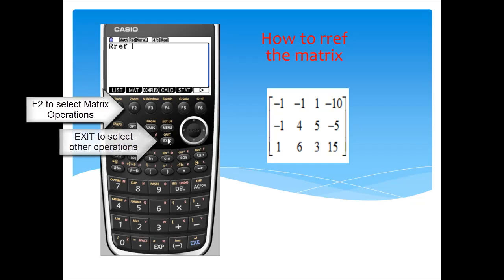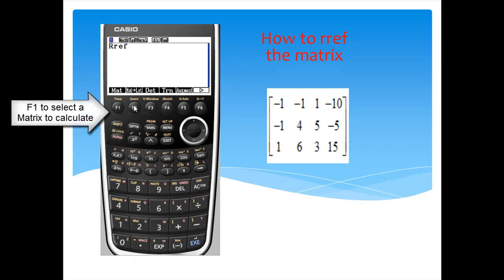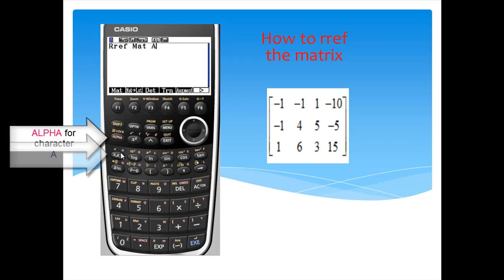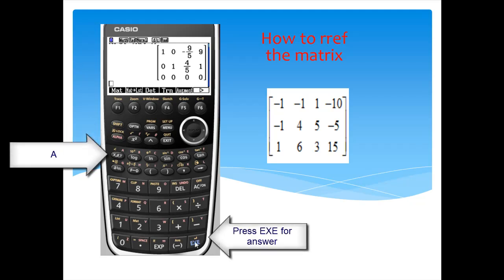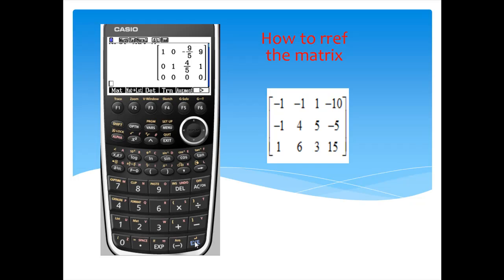Now exit. Select F1 for matrix, then F1 to enter matrix, and then alpha A for matrix A. Press EXE. The row reduced form appears.